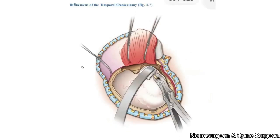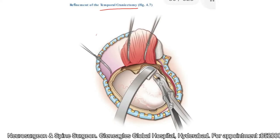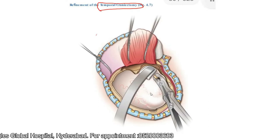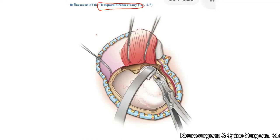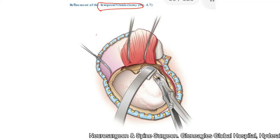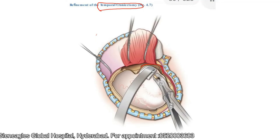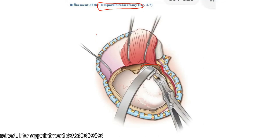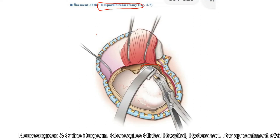Now this is an important step: the temporal craniotomy. In cases of traumatic brain injury and in cases of infarct with midline shift, uncal herniation is an important cause of death, and the uncus is a part of the temporal lobe. So you will have to decompress the temporal lobe effectively by completing the temporal craniotomy. I delicately use a dissector to separate the dura from the remaining part of the squamous temporal bone until I visualize the skull base — that is the base of the middle cranial fossa.